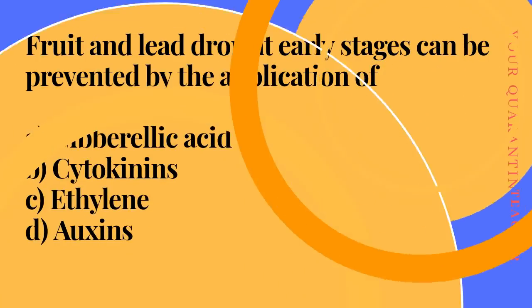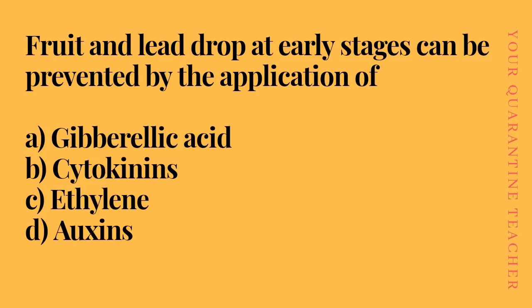Next question: fruit and leaf drop at early stages can be prevented by the application of. Option A: gibberellic acid, Option B: cytokinin, Option C: ethylene. The answer is auxins — Option D.